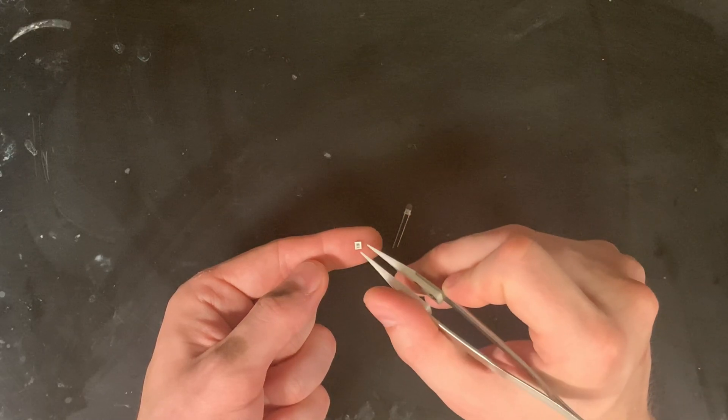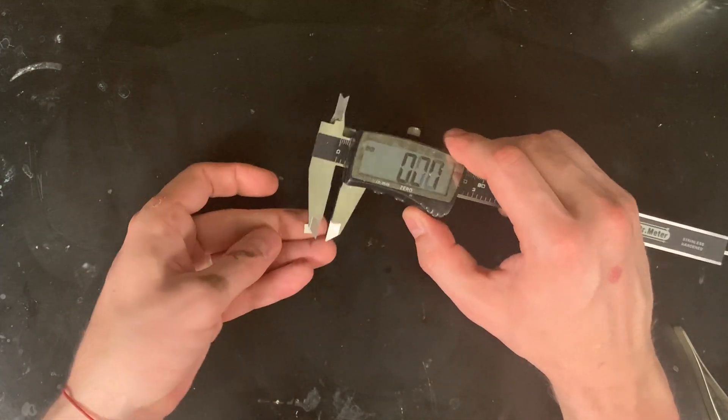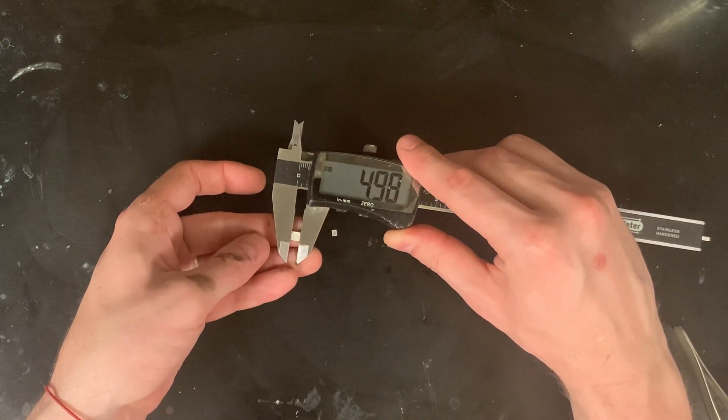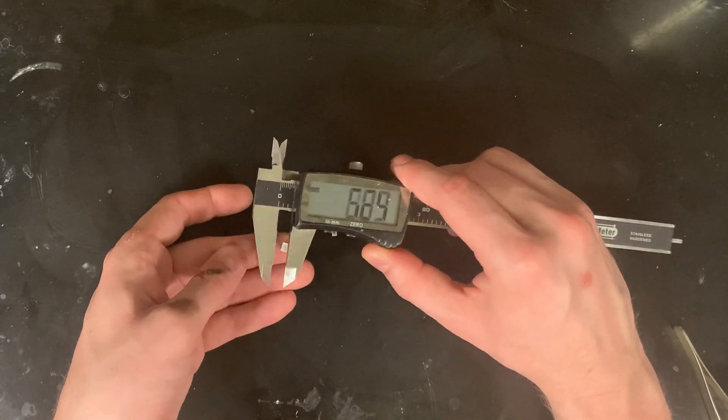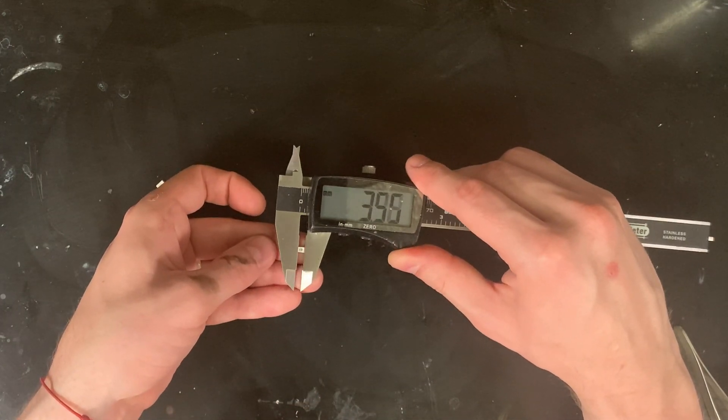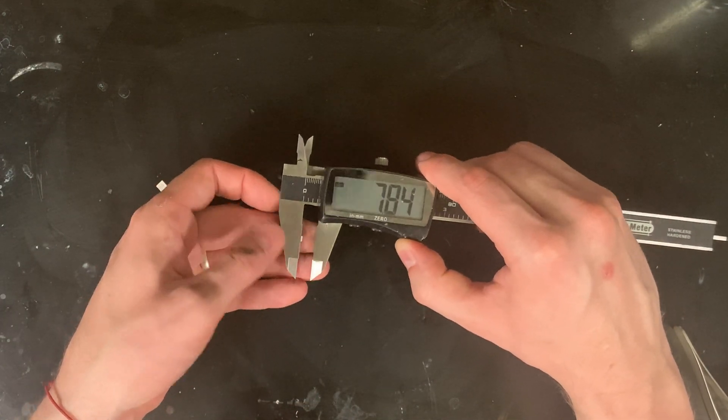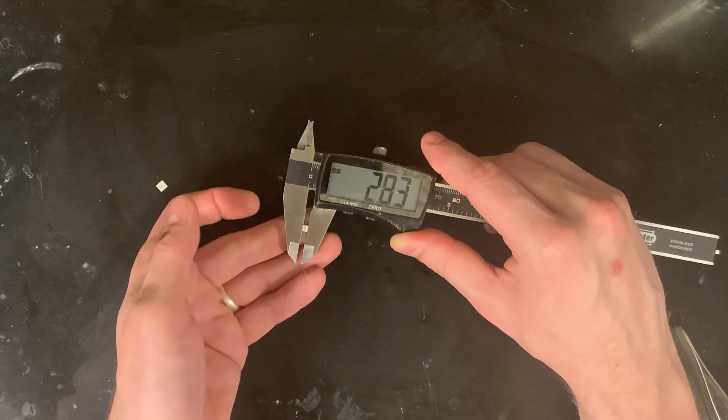All right, so what do these random numbers mean that I keep saying, like 2835 and the 5050? So if I take a pair of calipers, the 5050 is going to measure about 5 millimeters by about 5 millimeters, and the 2835 measures about 3.5 by about 2.8. So that's where these numbers are coming from. They're actually measurements of the LED.